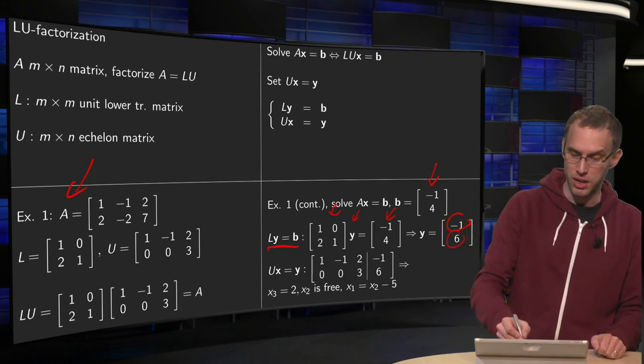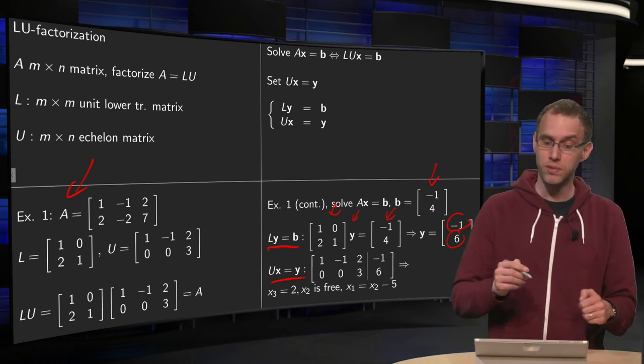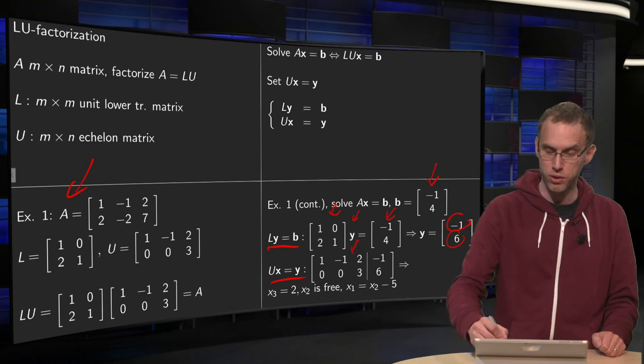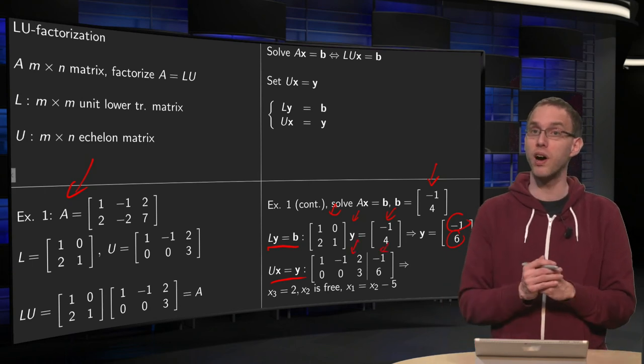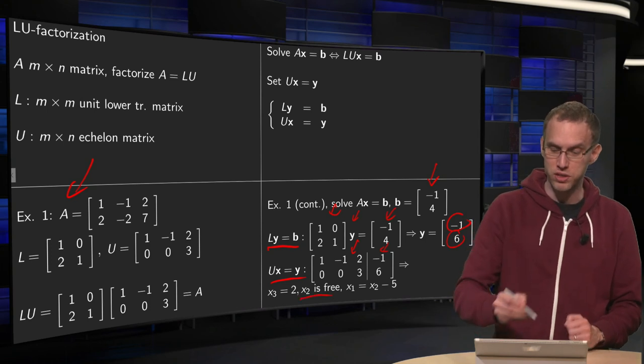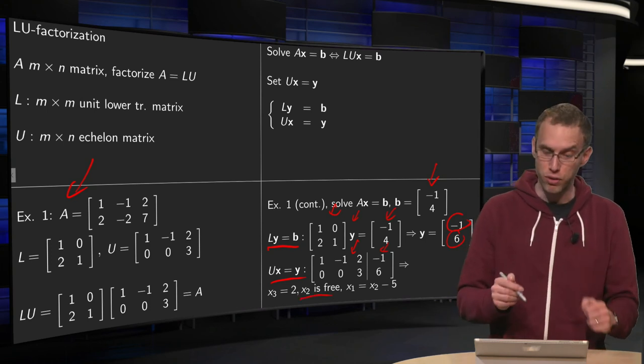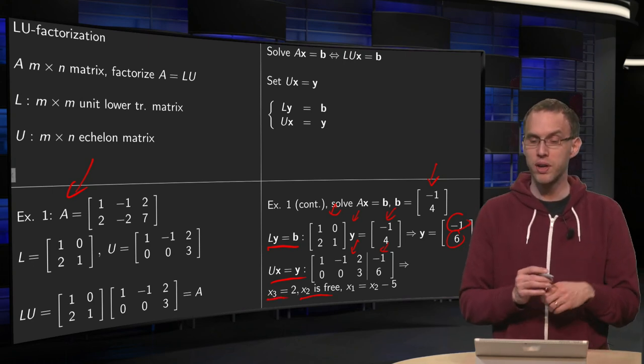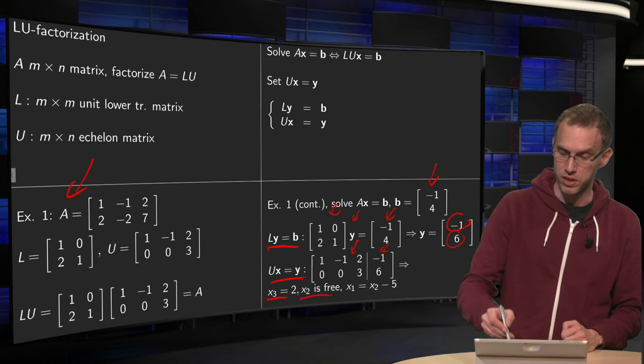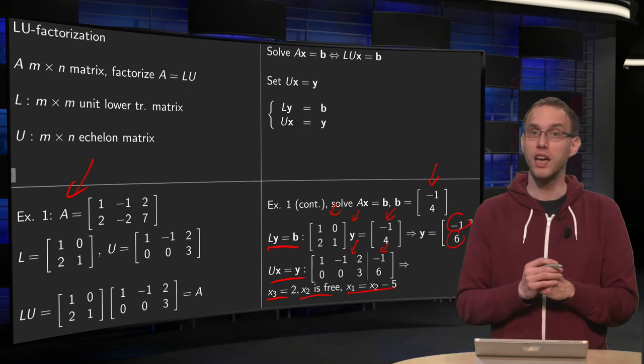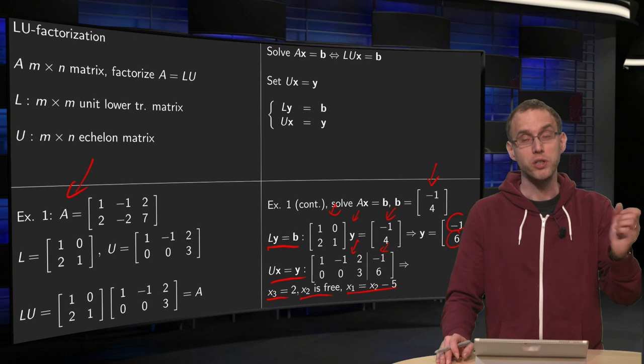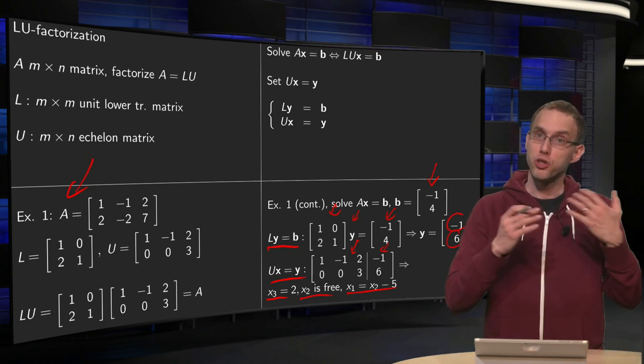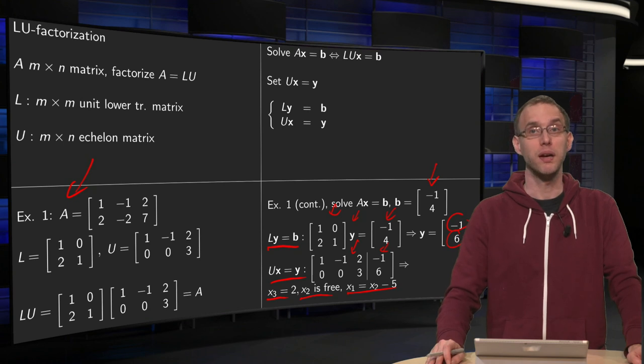And then in the next step you want to solve Ux equals y. But U is already in echelon form, so that is easy as well. You have your U from the augmented matrix y. You see that your x2 is free, it doesn't have a pivot. You solve for x3, 3 times x3 equals 6, so x3 equals 2. And you can express x1 in terms of your free variable x2. x1 equals x2 minus 5. So once you have your LU decomposition for A, then solving Ax equals b can be done really fast.